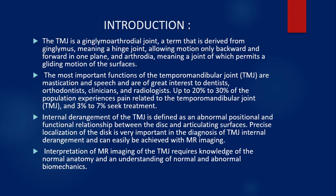Let's go with the introduction. The TMJ joint is a gingivo-arthrodial joint which allows motion only in a backward and forward direction and permits a gliding motion. The main function is mastication and speech, and hence is of great interest to the odontologist, clinicians, and the radiologist. The internal derangement of TMJ is defined as an abnormal positional and functional relationship between the disc and the articular surface. Precise localization of the disc is very important in the diagnosis of TMJ internal rearrangements. Hence, MRI imaging is required for the interpretation of these abnormalities.